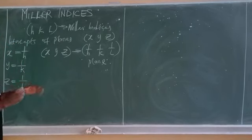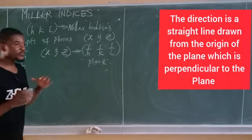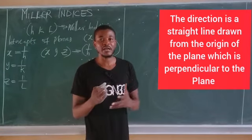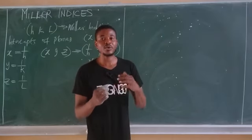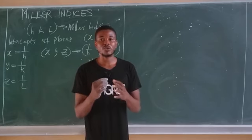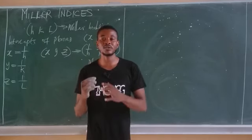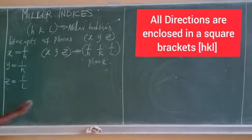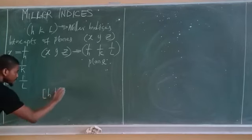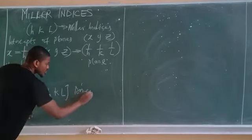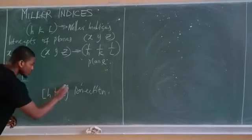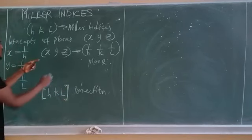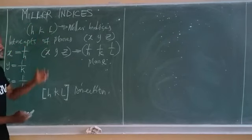Direction is simply a line plotted from the origin of the crystal structure that makes an angle of 90 degrees to the plane obtained from the Miller indices. All directions are enclosed in square brackets — something like [hkl]. Take note: directions are enclosed in square brackets while planes are enclosed in parentheses.